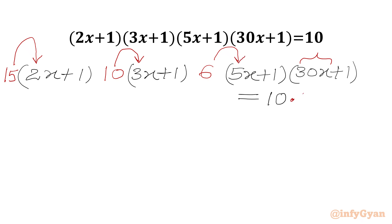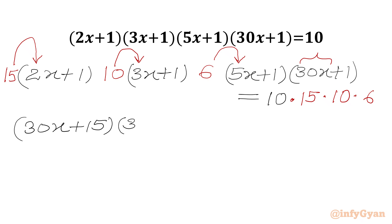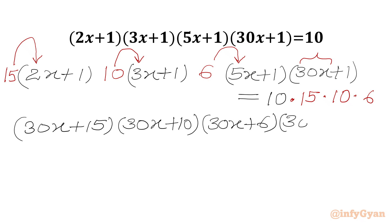So on the RHS we will multiply with 15, with 10, and with 6. Now we simplify LHS and RHS. We get (30x+15)(30x+10)(30x+6)(30x+1) on the left. The RHS will be 10 times 15 times 10 times 6, which is 9000. So we write 9000 on the right hand side.